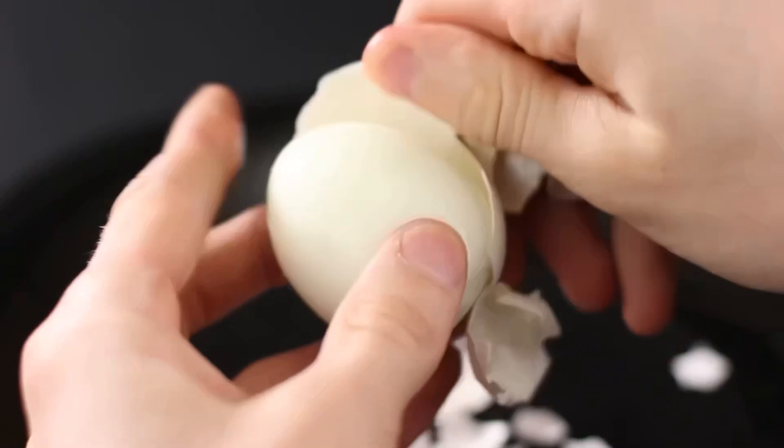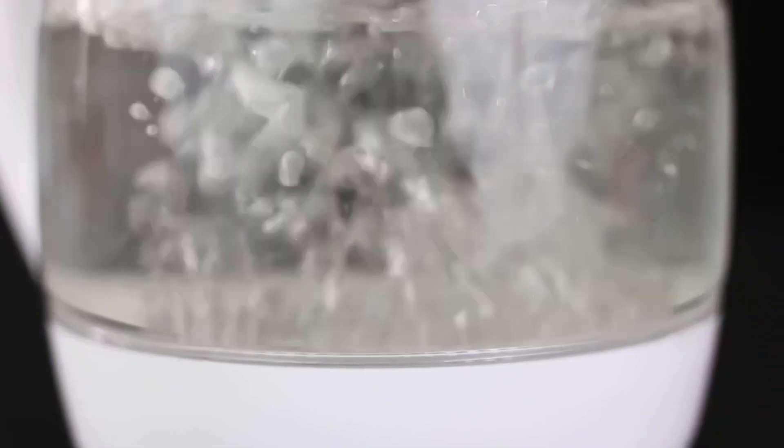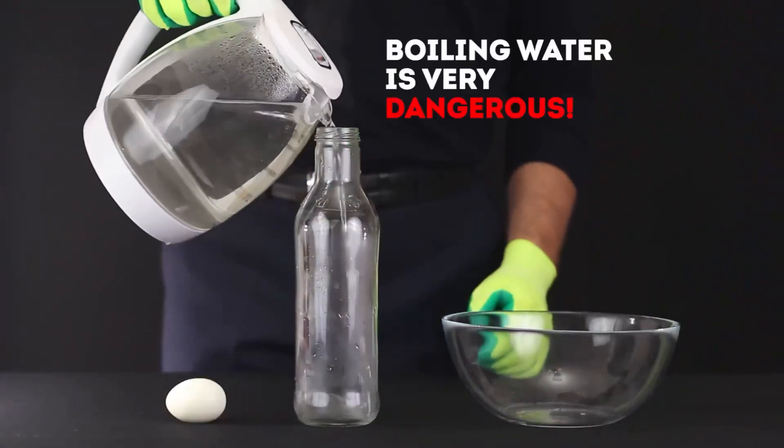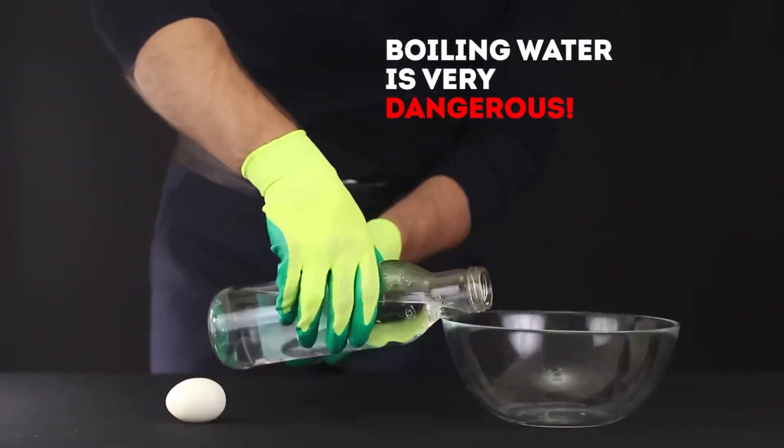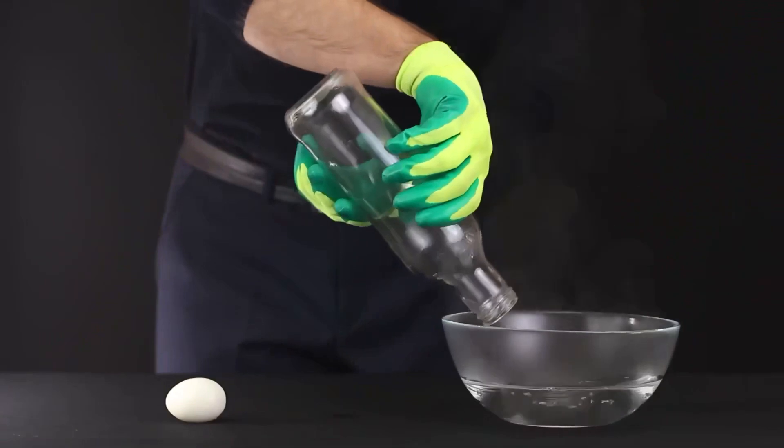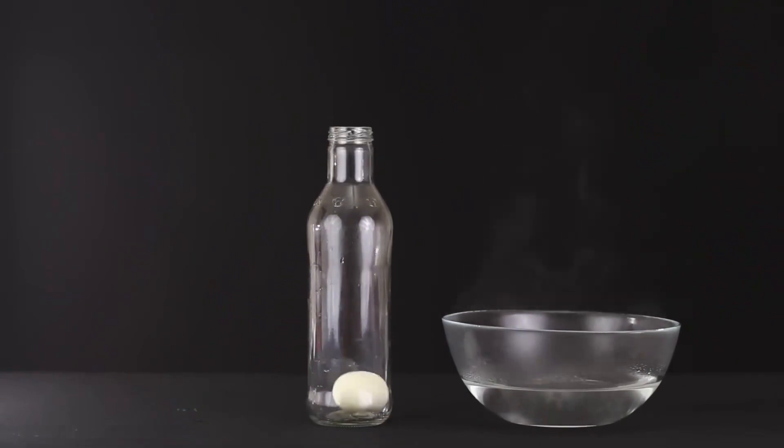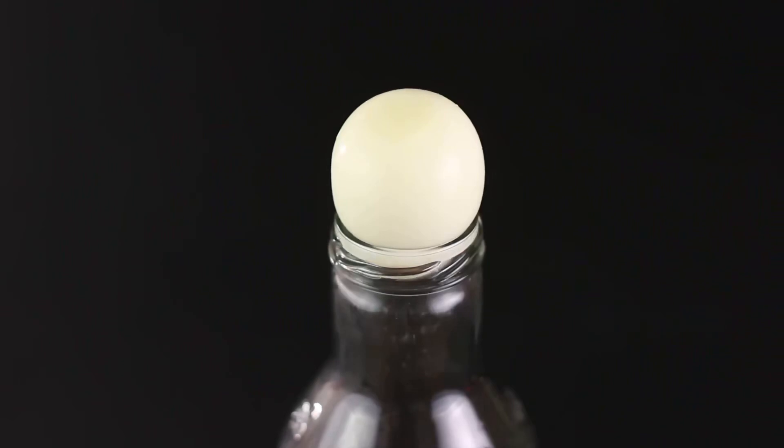This time we will use boiled eggs, hard boiled and peeled from the shell. Boil your water in a kettle, be careful with the boiling water. Pour it into a bottle, and when it heats up, pour it into a bowl. Now let's put the egg on top of the neck and just watch the wonders of physics. The egg literally pulls in. Did you hear that? Let's look again from the close angle.